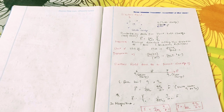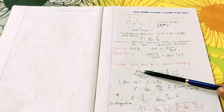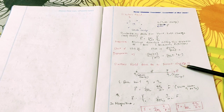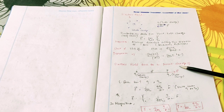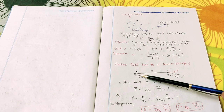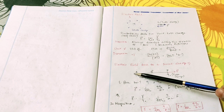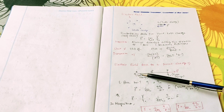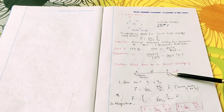In the previous class we calculated the electrostatic force for two point charges and for n number of point charges. Now we have to calculate the electric field due to a point charge, for two point charges, and for n number of point charges. First, we consider a source charge plus Q at origin O and calculate the electric field at point P.